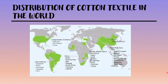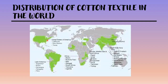Cotton textiles are mainly manufactured in the USA, especially in the eastern part where the climate is very mild. Cotton is also grown in large amounts and mills are situated in the eastern part. The mild climate helps the thread not to get broken while it is woven into yarn.